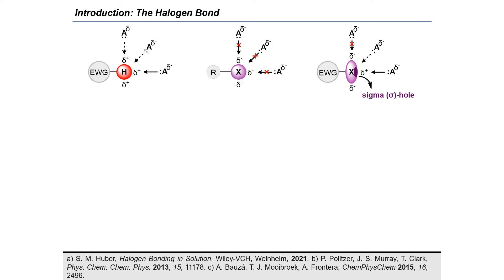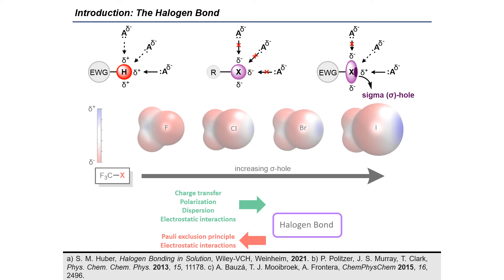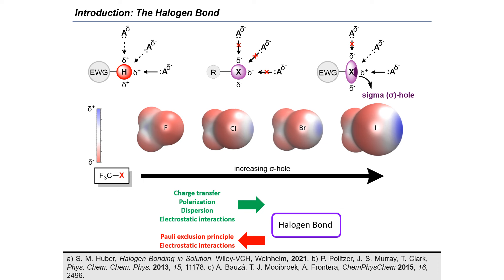By comparing the halogens with each other, we can see that the atoms are getting bigger and also that the sigma hole is getting larger for the heavier atoms, marked as the blue part.